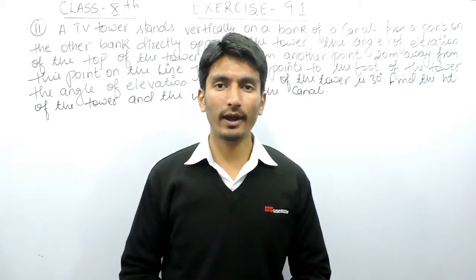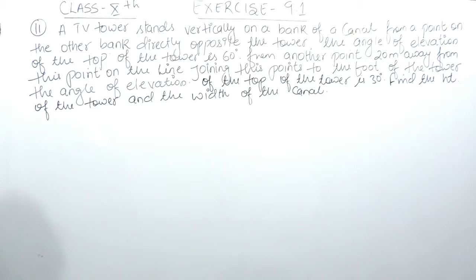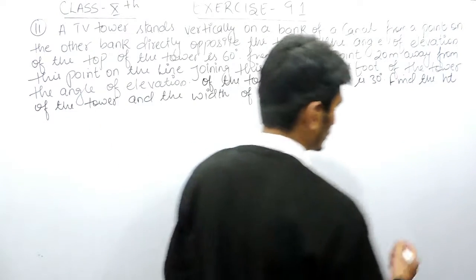Hello everyone, we are from True Maths and in this video we are going to solve question number 11 of Exercise 9.1. The question says: a TV tower stands vertically on a bank of a canal. From a point on the other bank directly opposite the tower, the angle of elevation of the top of the tower is 60 degrees. From another point 20 meters away on the line joining this point to the foot of the tower, the angle of elevation is 30 degrees. You have to find the height of the tower and the width of the canal.